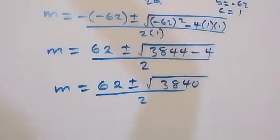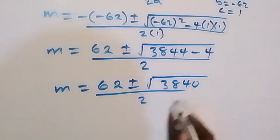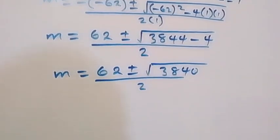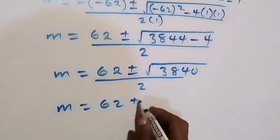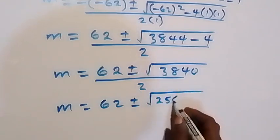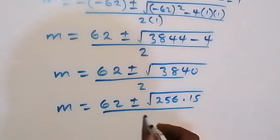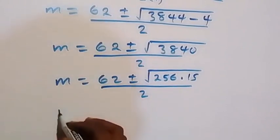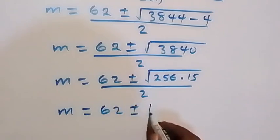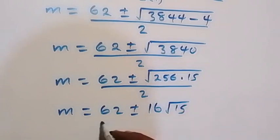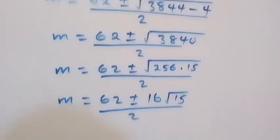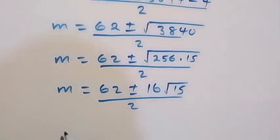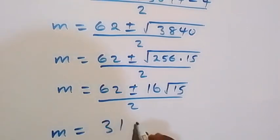From here, we can factor 3840 as 256 times 15. So m equals 62 plus or minus square root of 256 times 15, all over 2. Breaking this into two roots gives us 16 root of 15. Dividing through by 2, we get m equals 31 plus or minus 8 root of 15. So we have two possible cases for m.